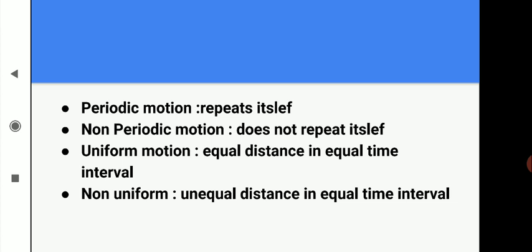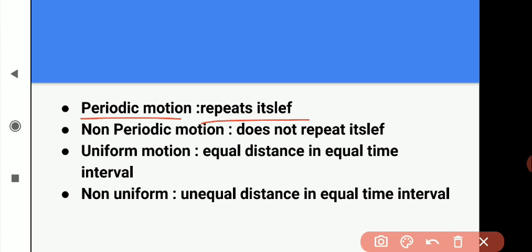Next, periodic motion. A motion which repeats itself after equal intervals of time is said to be periodic motion. Periodic motion mein object ki motion repeat karti hai equal interval of time ke baad. For example, motion of the hands of a clock and motion of the needle of a sewing machine. Every oscillatory motion is also a periodic motion, because in oscillatory motion the motion repeats itself.